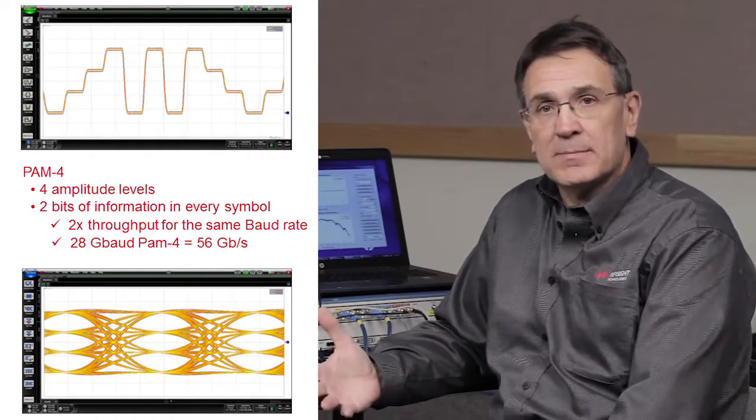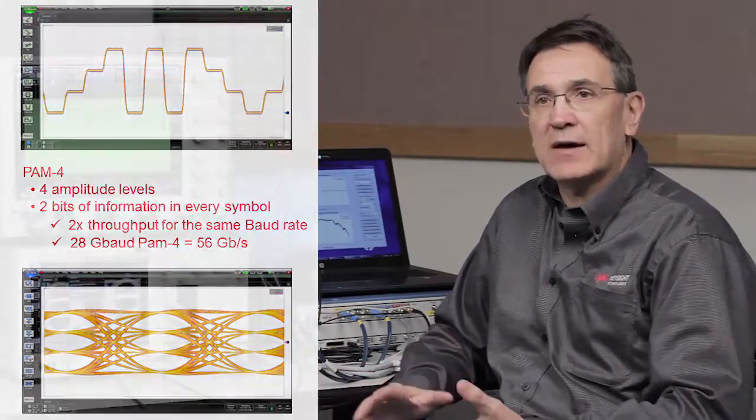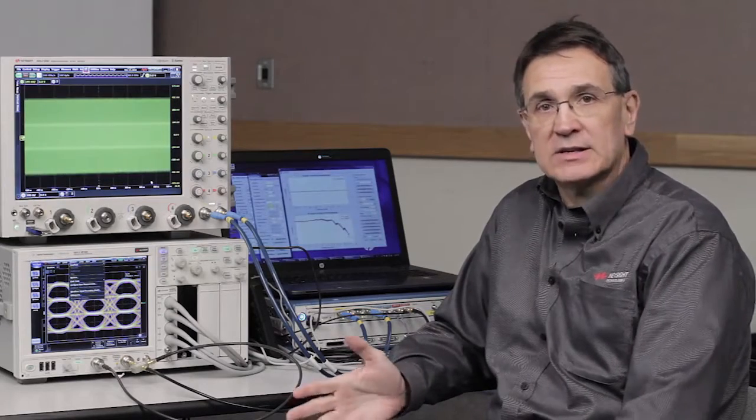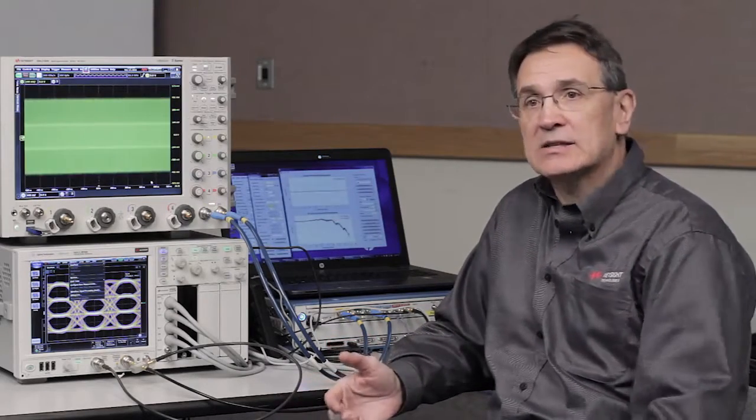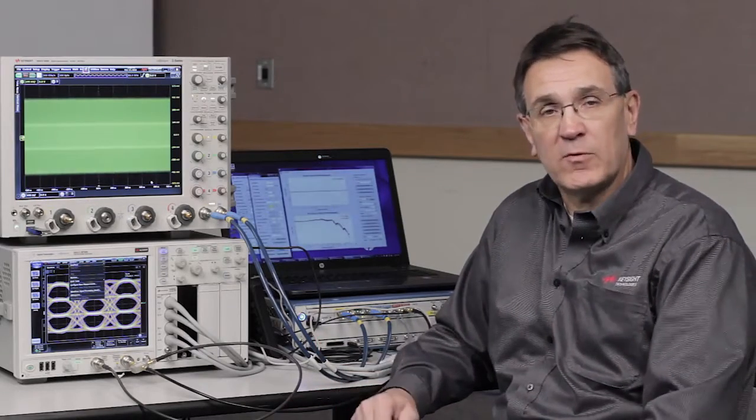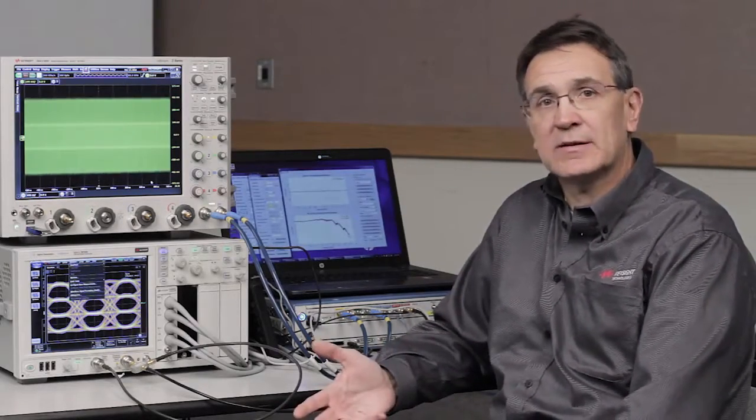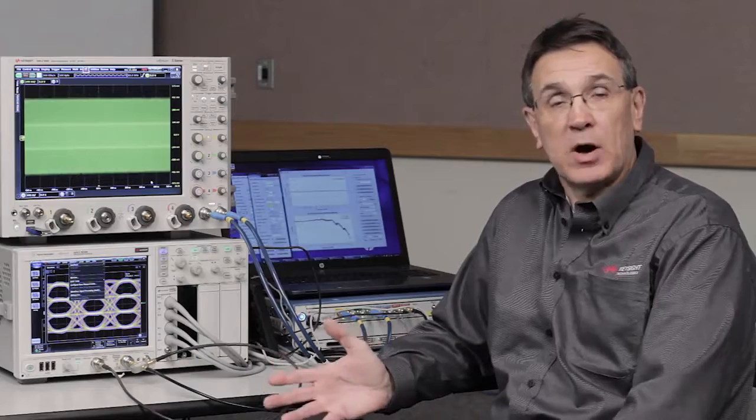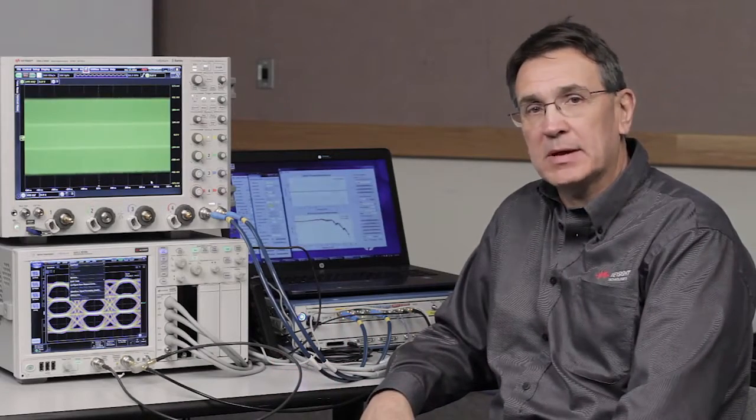Now this is an important speed because we have up and coming some OIF 4.0 standards that will be operating at 56 Gb per second and some of those standards are really specifying PAM-4 as one of the possible physical layer implementations. So what I wanted to do is to show you today a couple of the measurements that you can make with a real-time scope for these PAM-4 measurements at 28 Gbaud or 56 Gb per second.